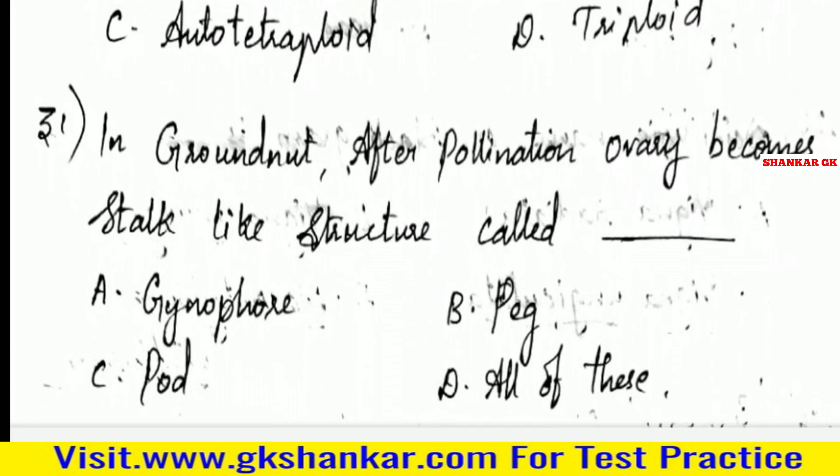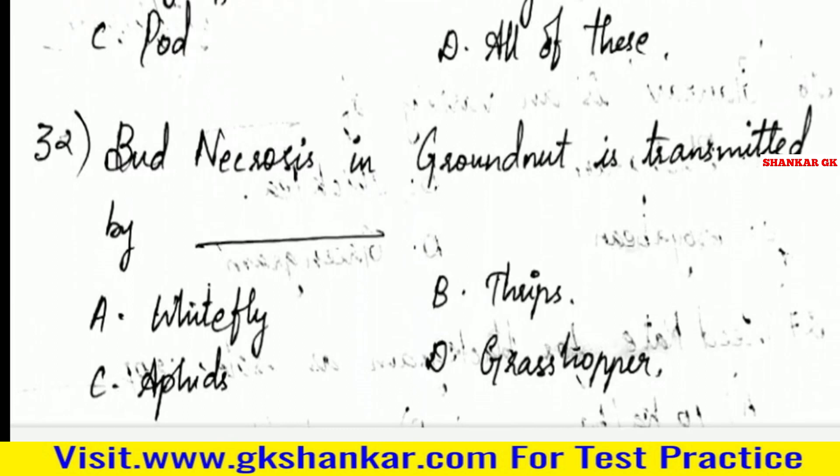Thirtieth question: In groundnut, after pollination the ovary becomes a stock-like structure called — A. Gynophore, B. Peg, C. Pod, D. All of these. Answer: A. Gynophore.